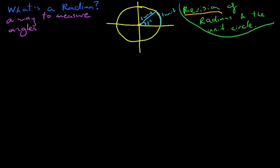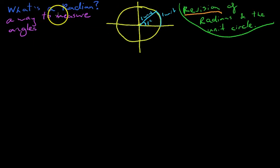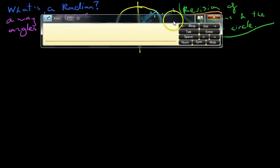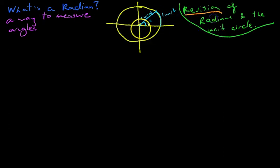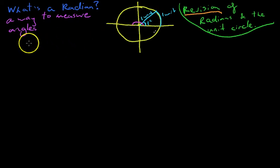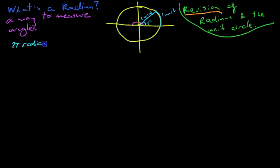Now, knowing what we know about circles, there are going to be 3.14 or pi radians if we go from one side to the other. There are pi radians going from here to here — shown in a different colour so you can see that. So a little bit of knowledge: pi radians equals 180 degrees.